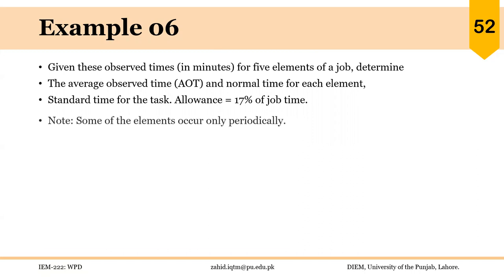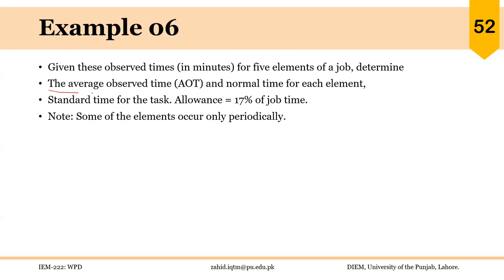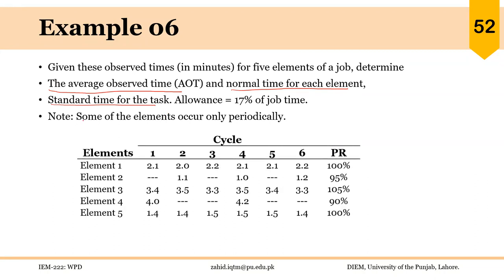Let's solve another example. Given observed times in minutes for five elements of a job, we need to determine the average observed time and normal time for each element, and the standard time for the task; allowance is 17% of job time. Note that some elements occur only periodically: element two occurs every other cycle and element four occurs every three cycles. We are given a performance rating for each element — 100% for element one, 95% for element two, and so on.